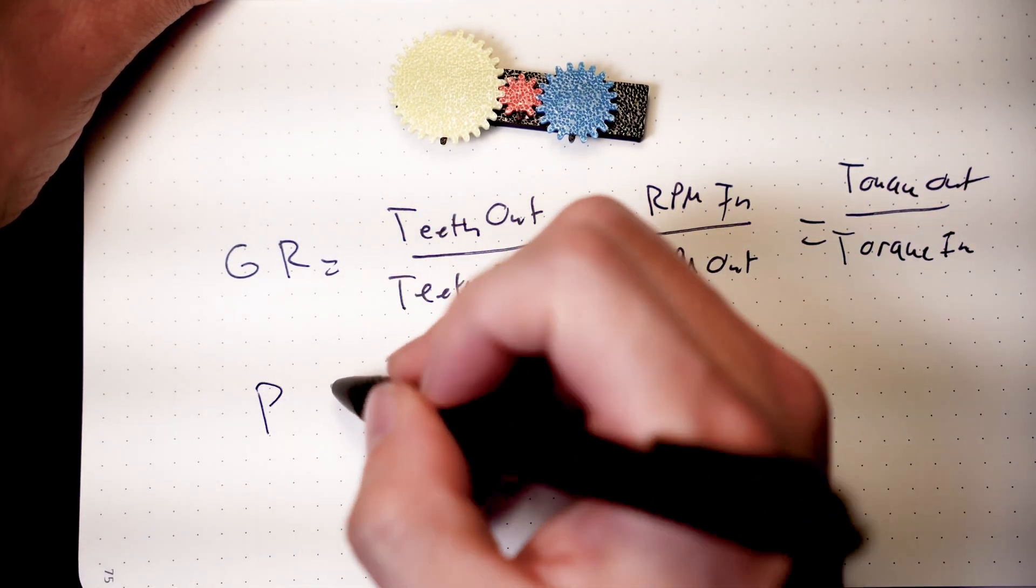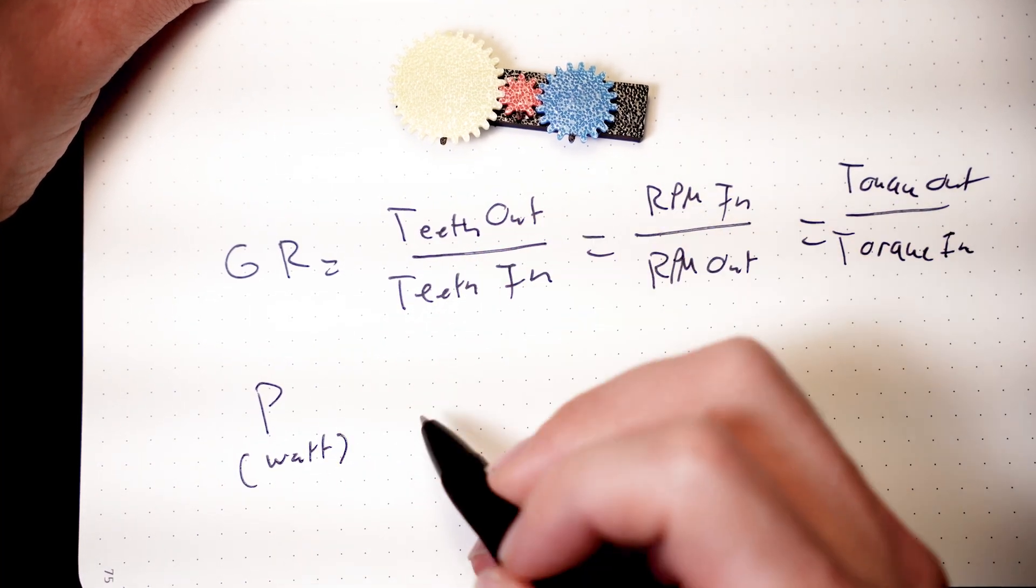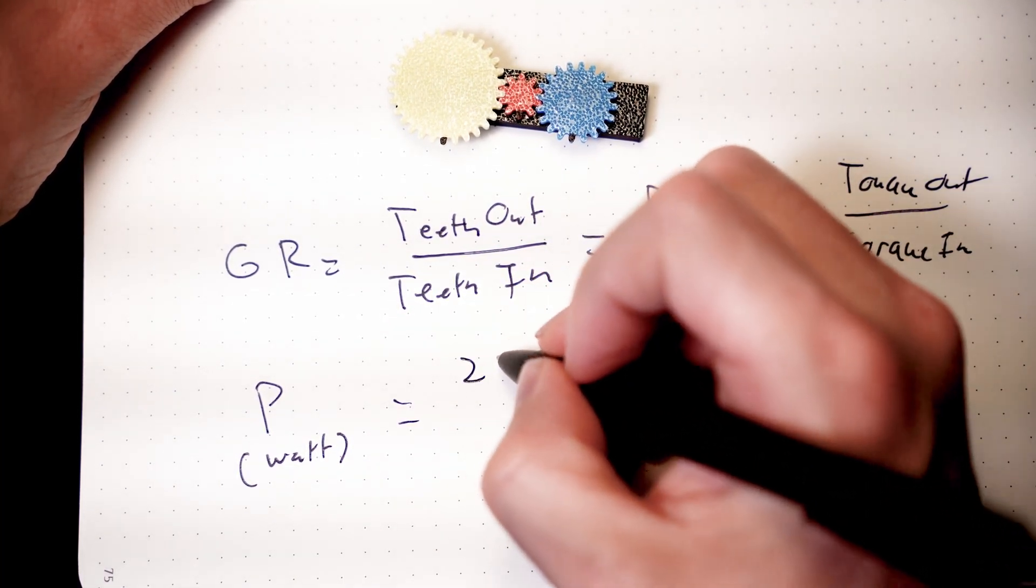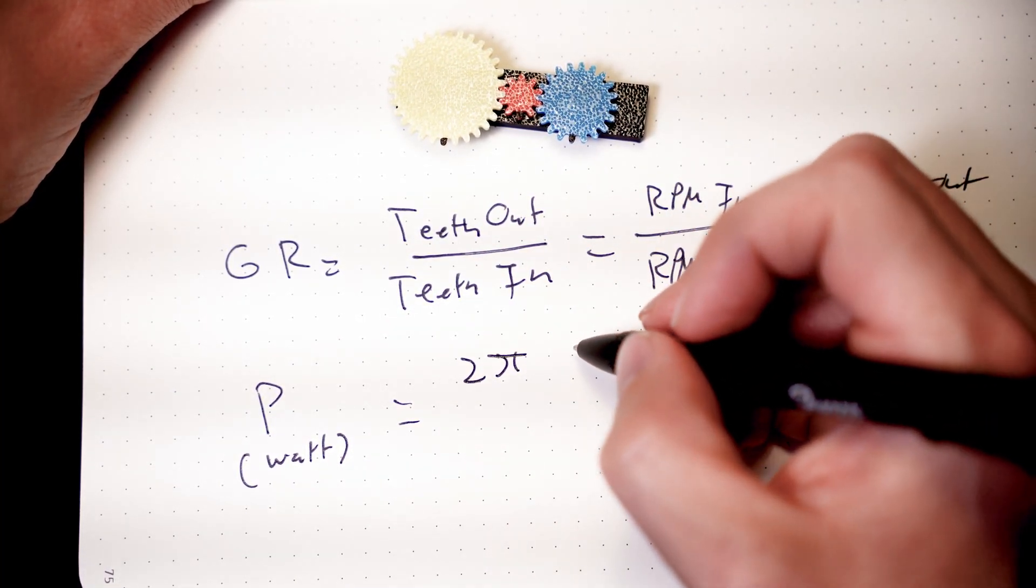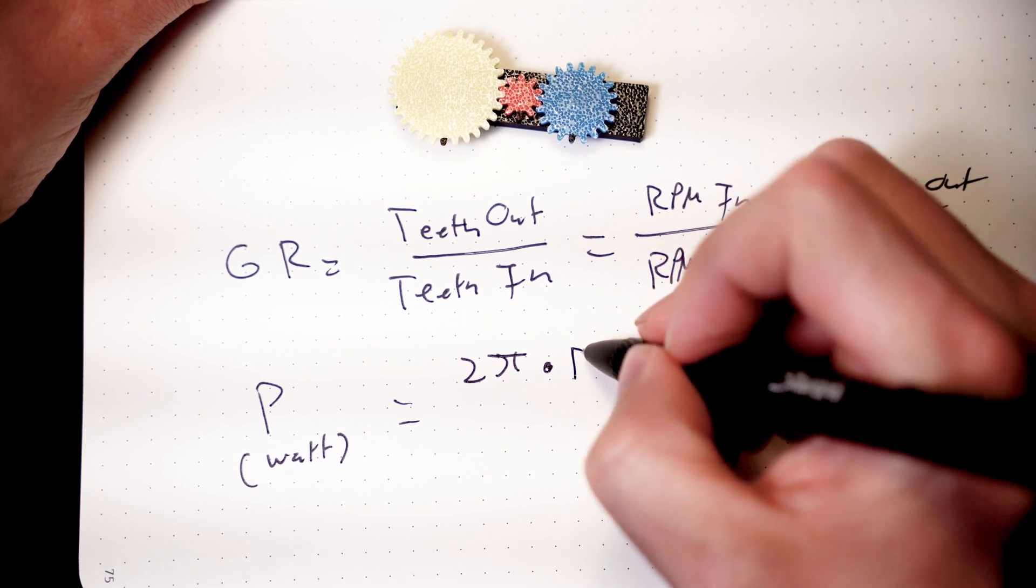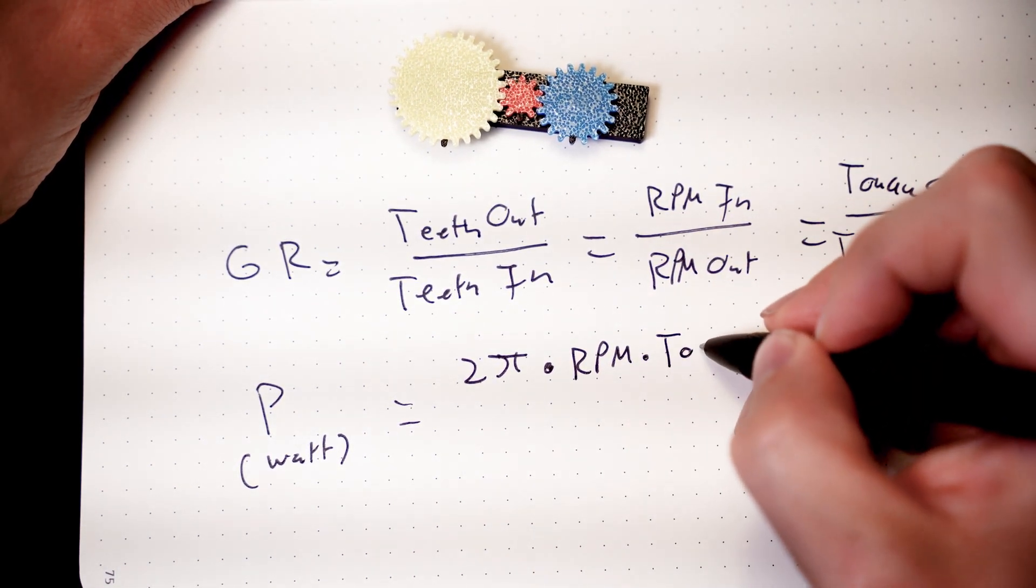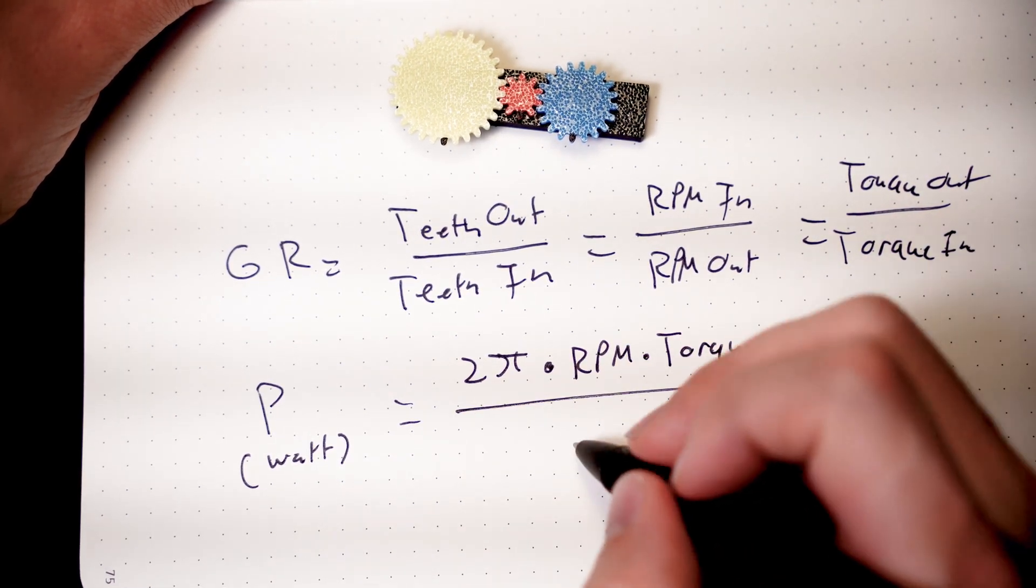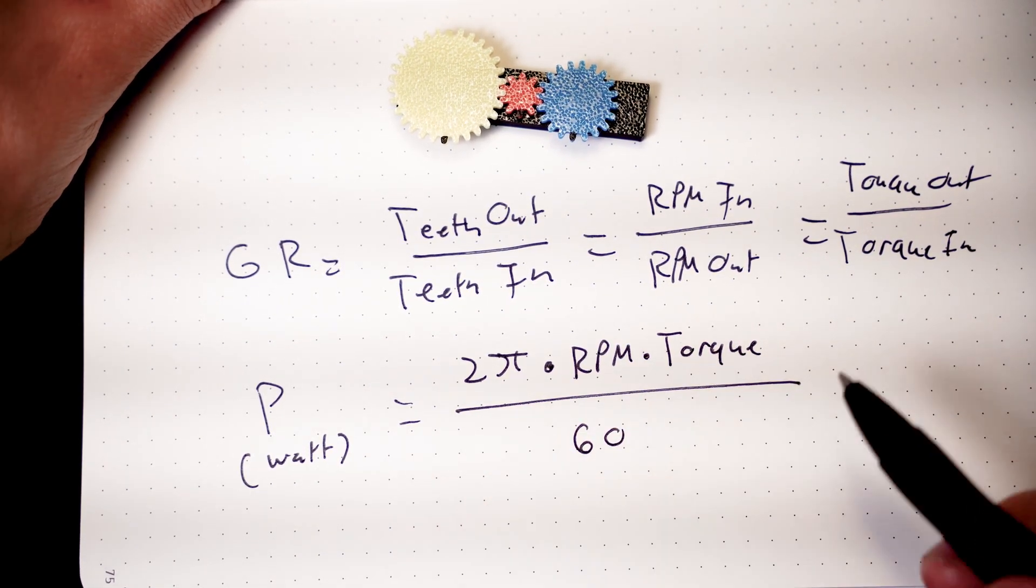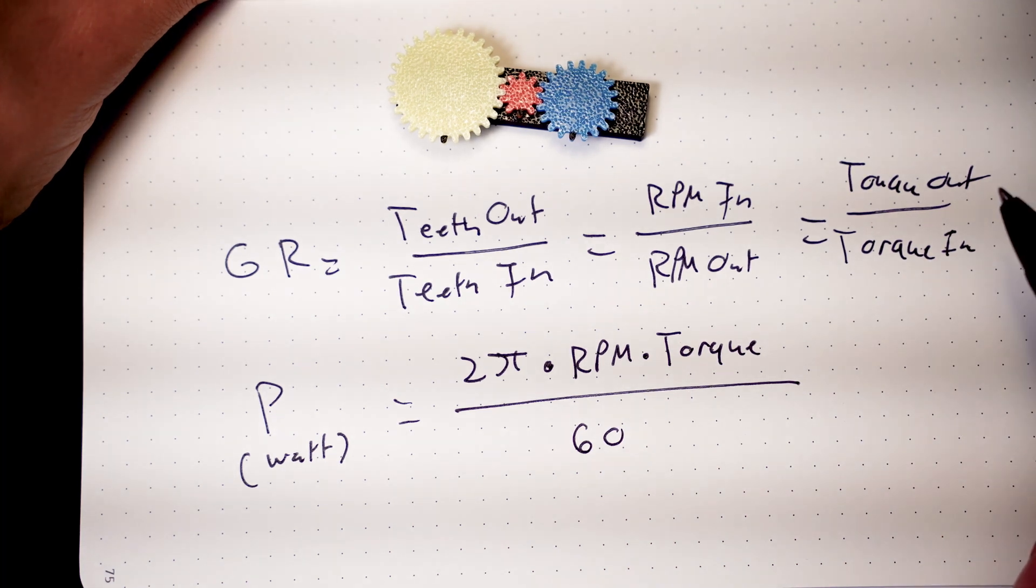If you want to find the power or the wattage of your system, you can use two multiplied by pi times your RPM times your torque divided by 60 will give you whatever your wattage system is.